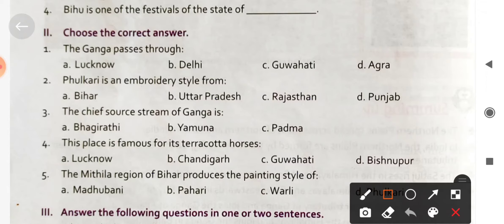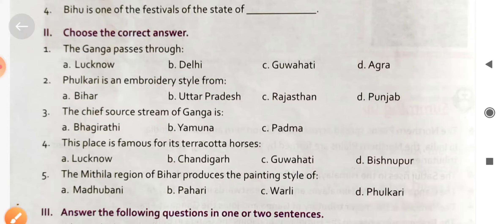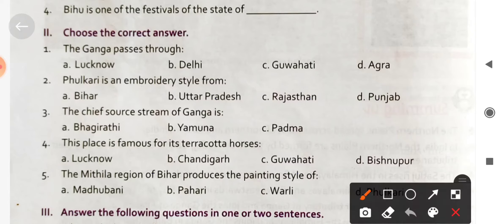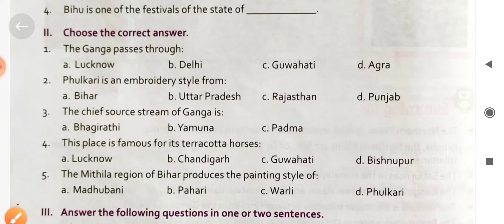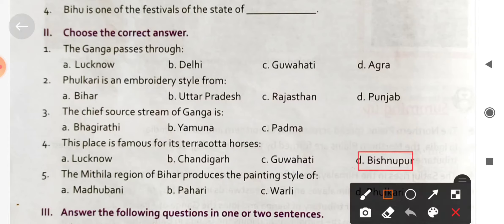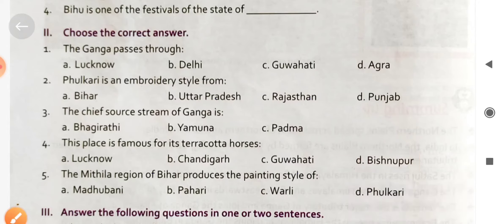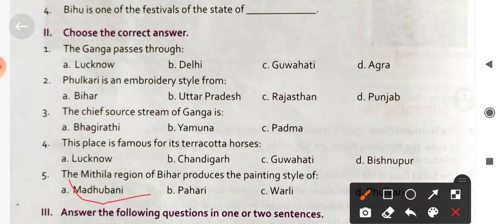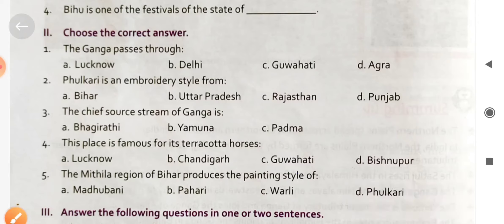Phulkari is an embroidery style and handicraft which is famous in Punjab. The chief source stream of Ganga, which originates from the Gangotri Glacier, is called Bhagirathi. Vishnupur is famous for Terracotta art. The Mithila region of Bihar produces the Madhubani style of painting.